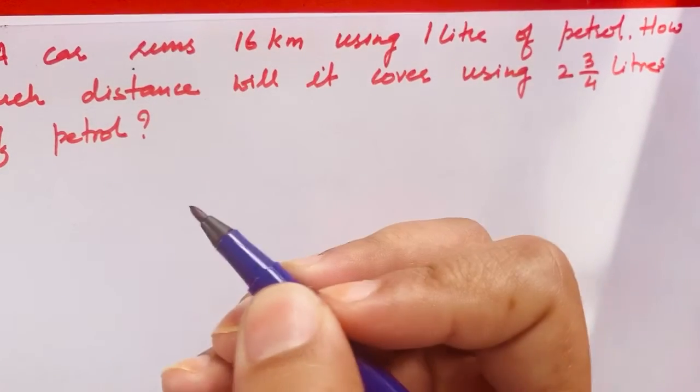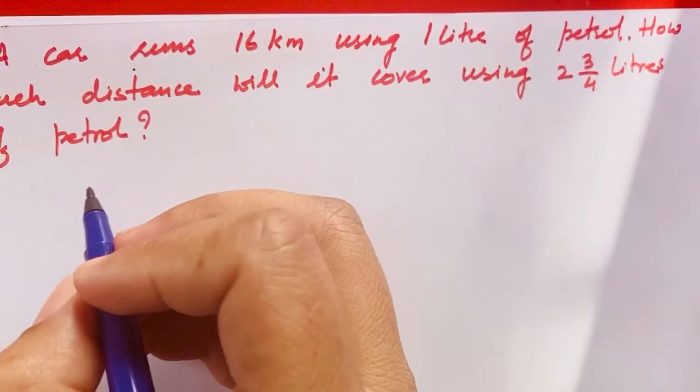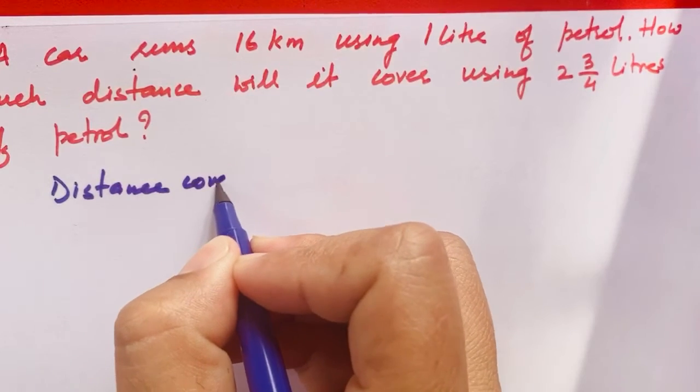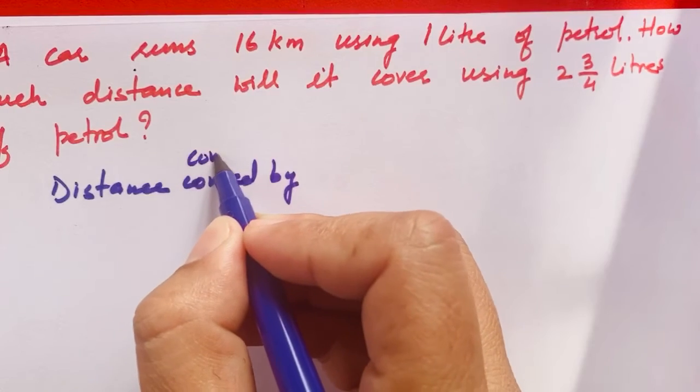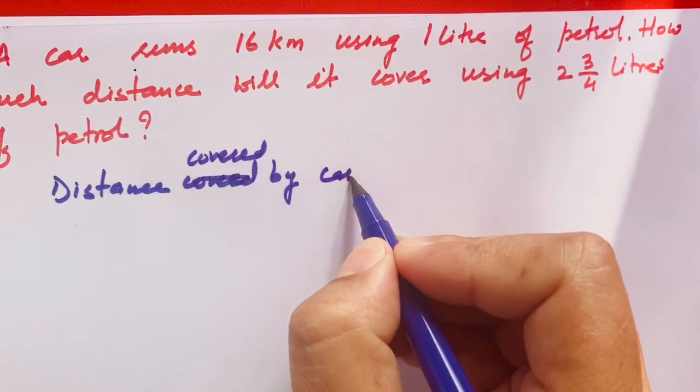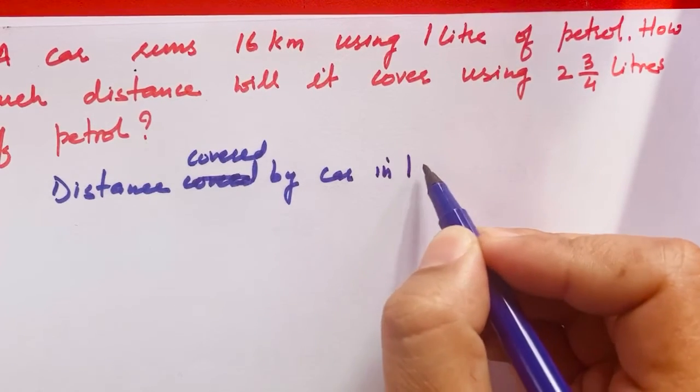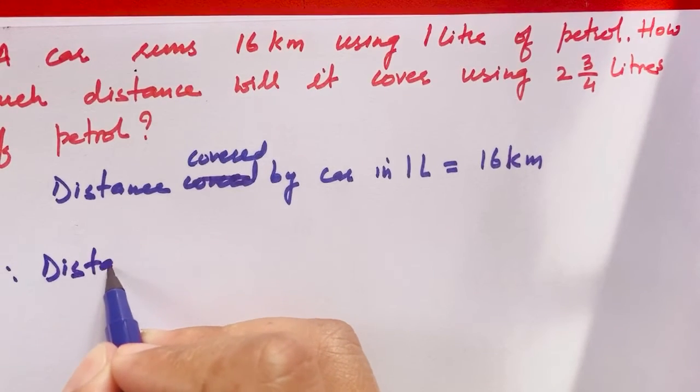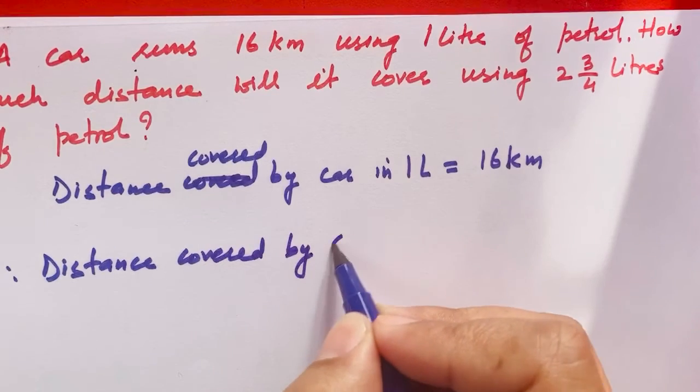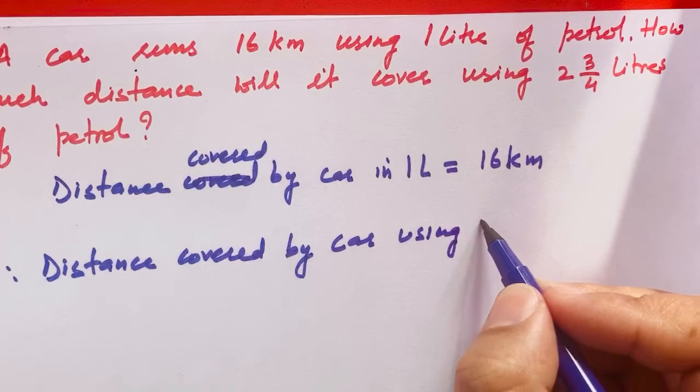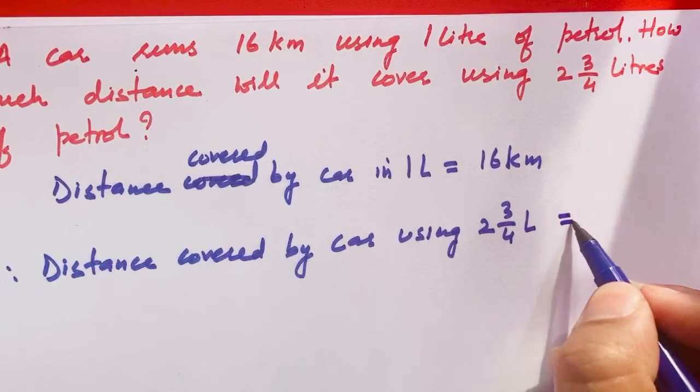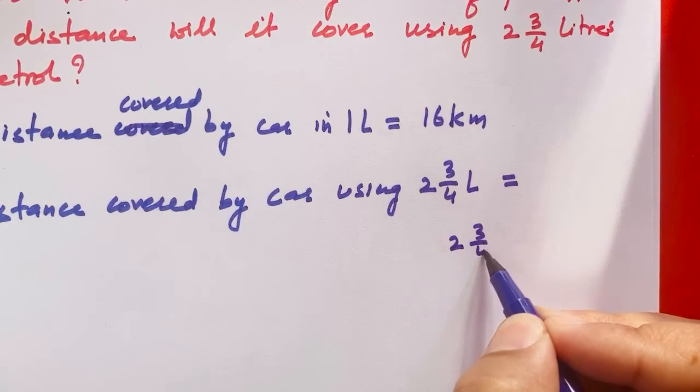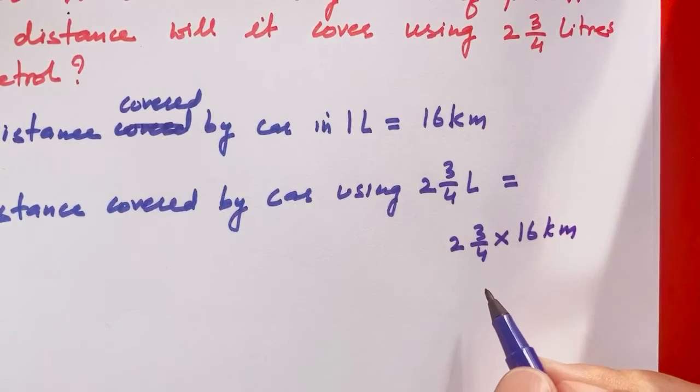This distance will be covered by car. 1 liter is covered by 16 km. Therefore, distance covered by car using 2 whole 3 upon 4 liter equals 2 whole 3 upon 4 into 16 km.